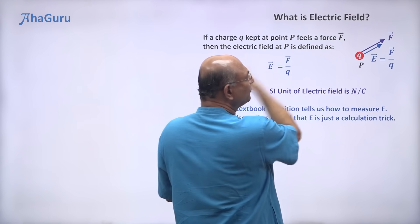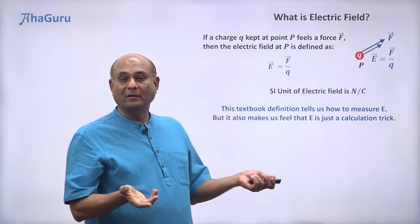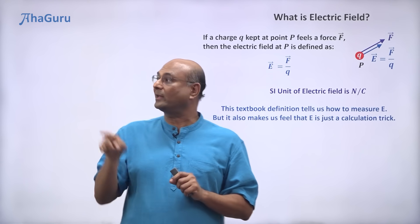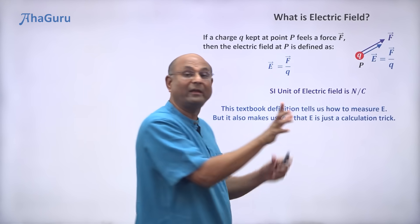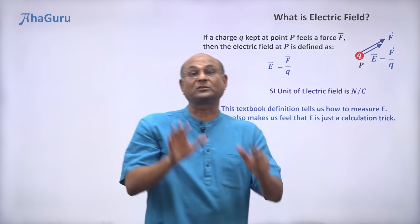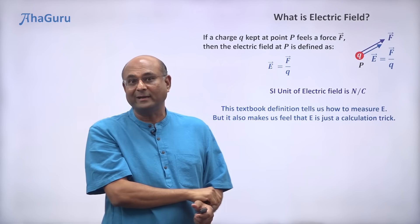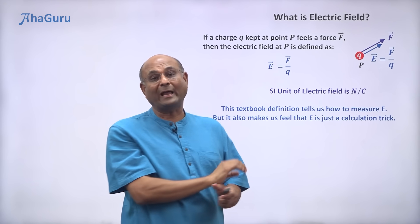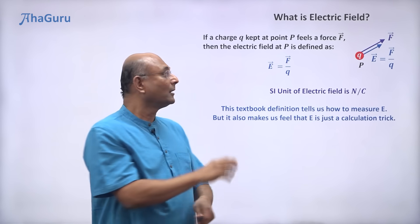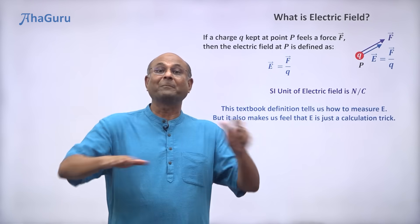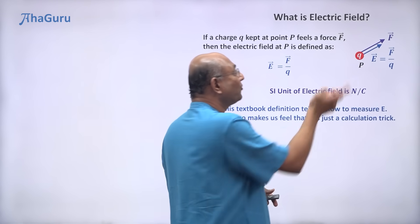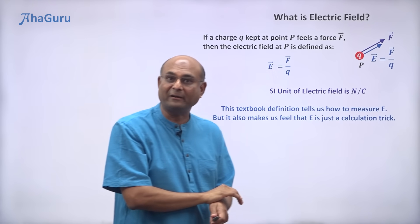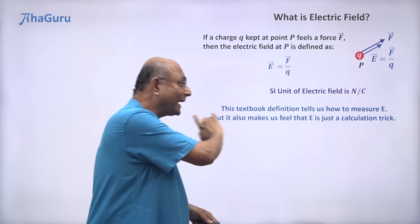Now, this is the textbook definition for electric field — it tells you how to measure E, not what E is. What is E? E is an arrow in space. This definition makes it feel like a calculation trick. But suppose I removed Q — F will go away. What about E? E will still be there. Right now, even without a charge placed here, there is an electric field arrow here, and there is an electric field arrow everywhere. When there is no force, you still have an electric field arrow. This definition is useful for calculating the value of the electric field vector, but you have to imagine that the electric field vector comes first — it is there everywhere — and then the force is produced by the electric field vector.